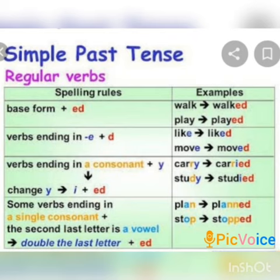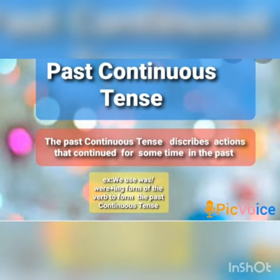Fourth one: some verbs ending in a single consonant where the second last letter is a vowel — double the last letter plus ed. Plan — planned; stop — stopped.